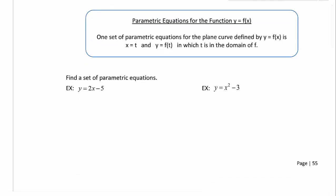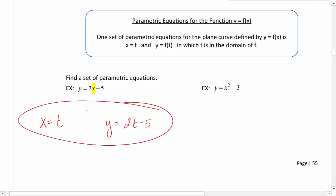We know a parametric equation has an x equals and a y equals. Every single time, we're going to let x be equal to t. Now, to get the y equation, all you're going to do is put t in where there was an x. We get y to be 2t minus 5, and that's it.